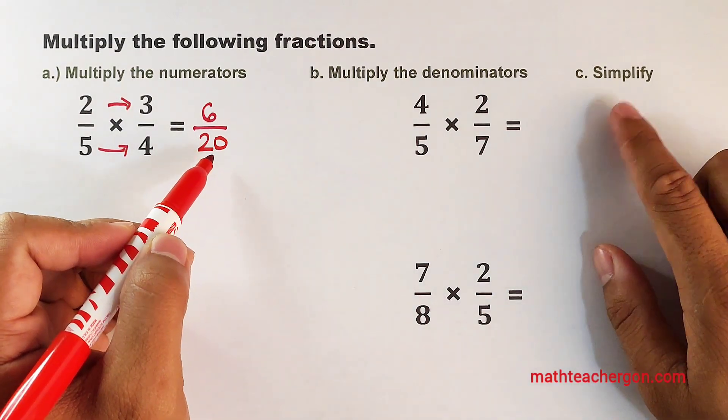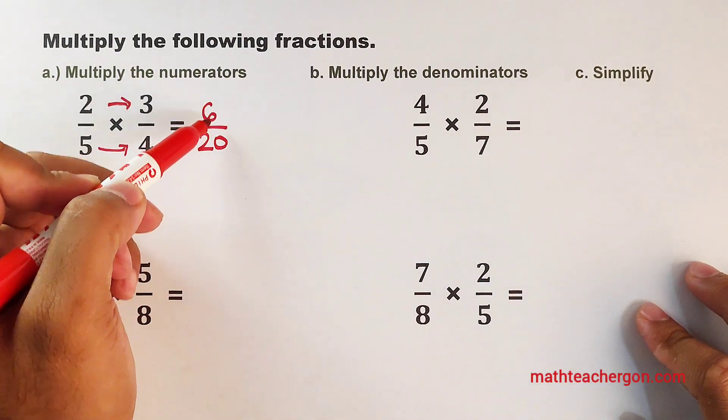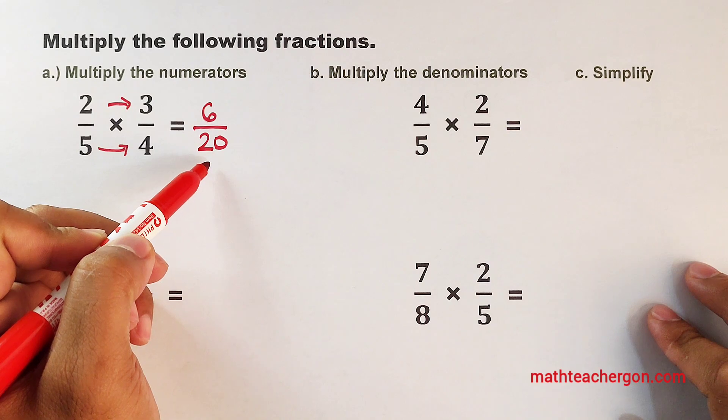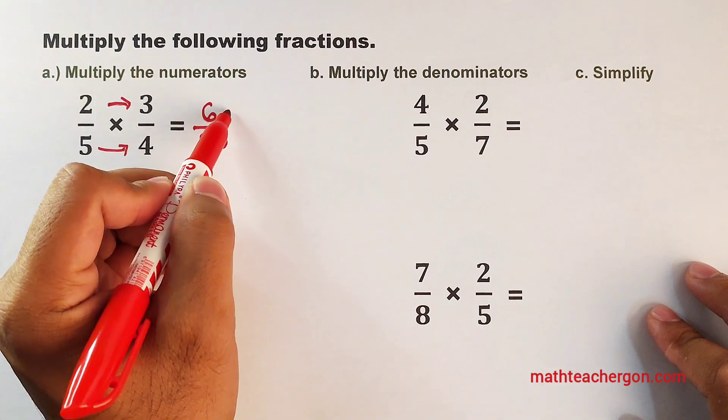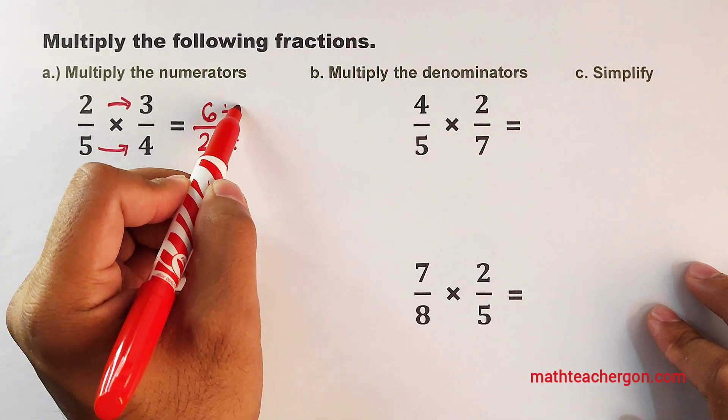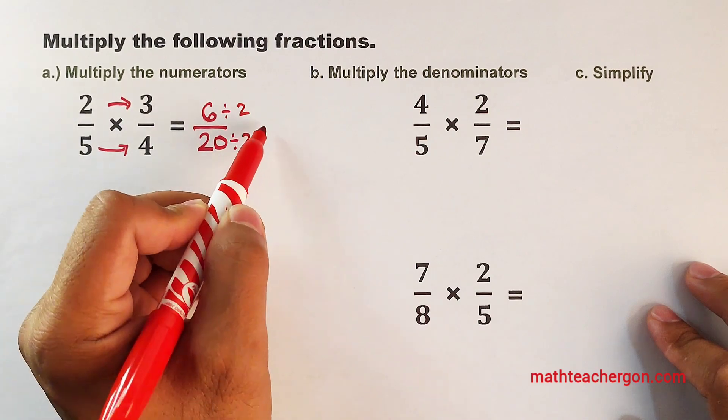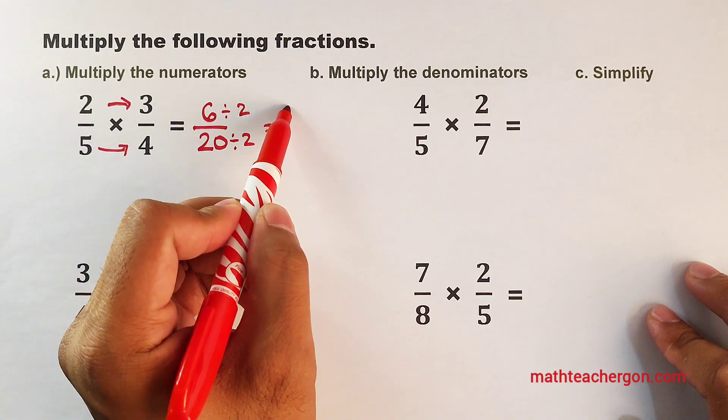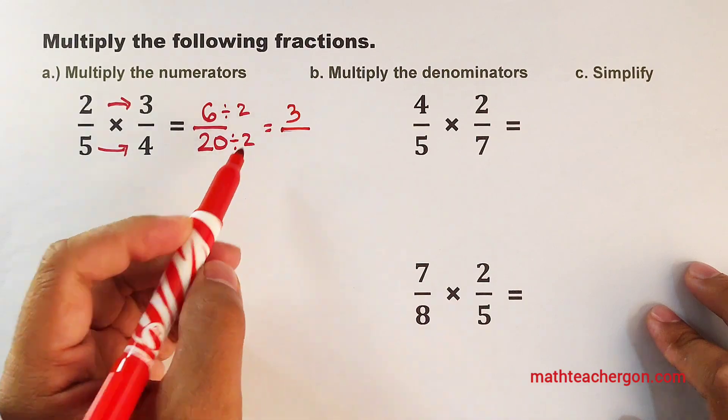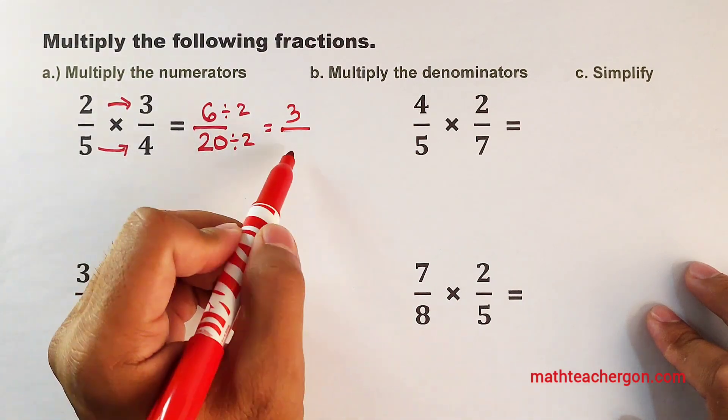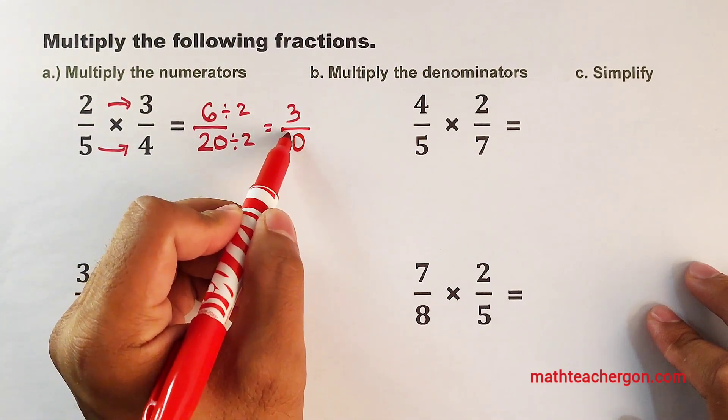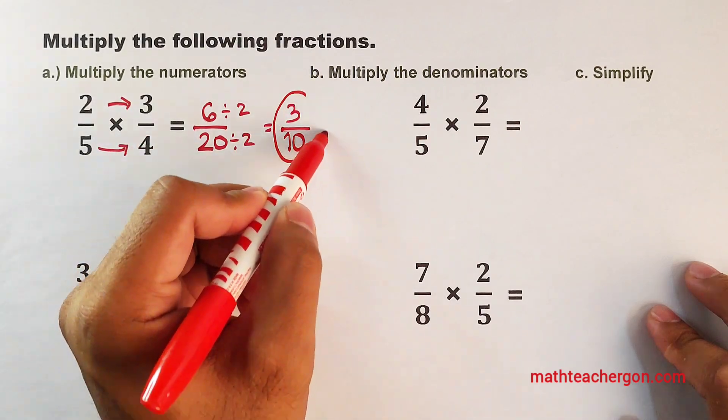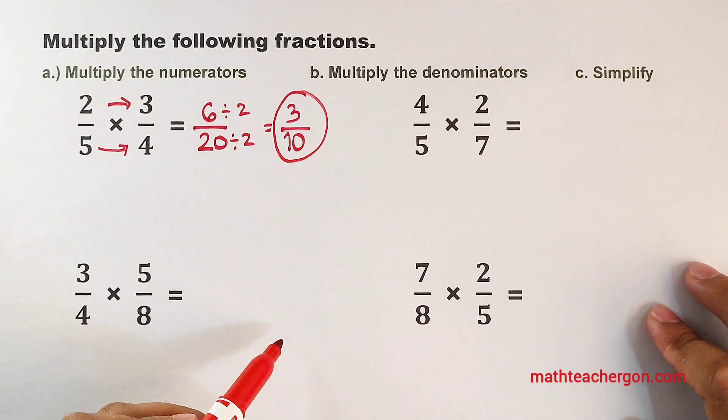And lastly, we will simplify. The 6 over 20 can be simplified by dividing the numerator and the denominator by 2. So, in this case, 6 divided by 2, that would be 3 over 20 divided by 2, that is 10. And as you can see, this is now the final answer for item number 1.